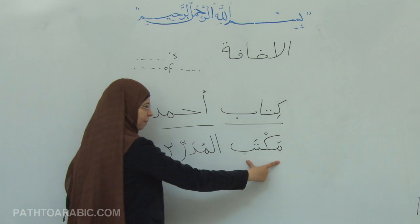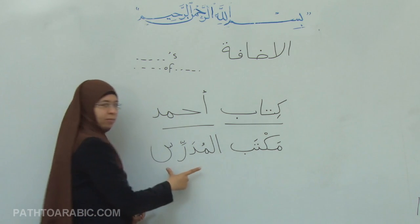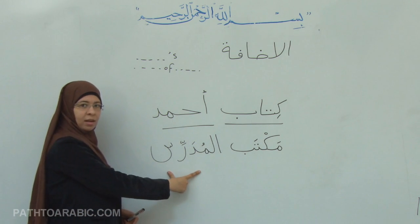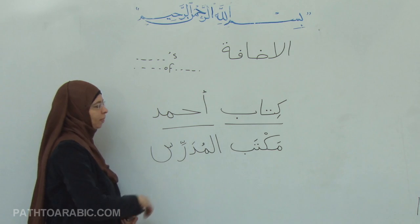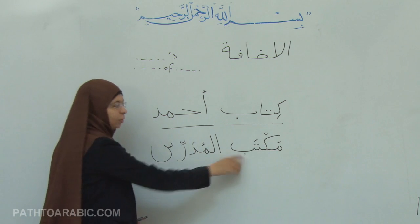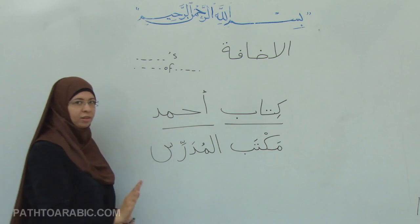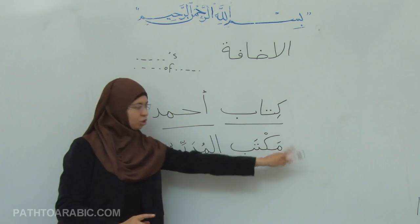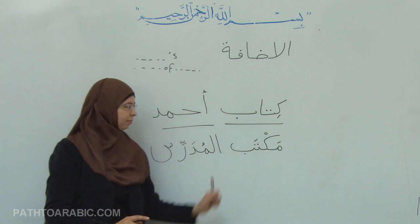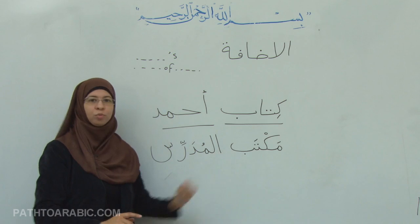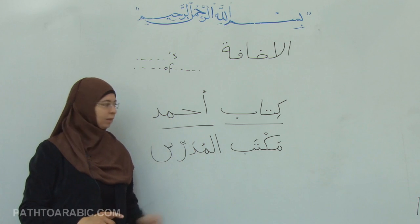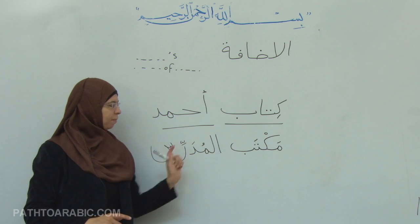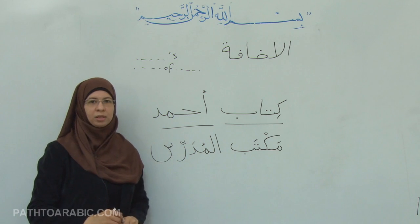مكتب is a noun, and المدرس is another noun. The first noun is never definite — there is no alif lam and there is no possessive ending. مكتب المدرس.